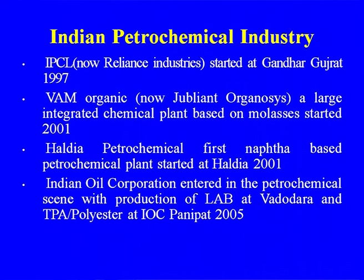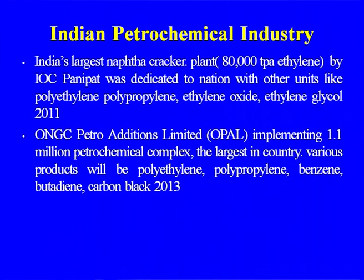Reliance Industries Hazira became one of the largest integrated petrochemical complexes, developed in three phases, with addition of a PET resin plant. IPCL (now Reliance) Nagothane was the first cracker plant commissioned in 1992. Mangalore Refinery and Petrochemicals (now under ONGC) was set up in 1996. NIRMA's LAB plant came online in 1997. IPCL Gandhar unit has a gas cracker with VAM and organic chemicals — one of the largest integrated plants based on molasses, started in 2000. Haldia Petrochemicals was the first naphtha-based complex in West Bengal, started in 2001. Indian Oil entered petrochemicals with LAB at Vadodara in 2005. India's largest cracker plant — IOC Panipat North — was dedicated to the nation in 2011. ONGC Petro Additions Limited (OPaL) is implementing a 1.1 million ton petrochemical complex at Dahej, making polyethylene, polypropylene, benzene, and butadiene, with work begun in 2013.